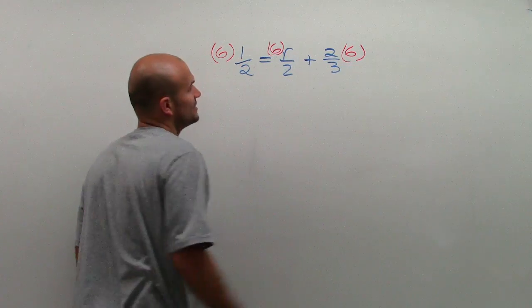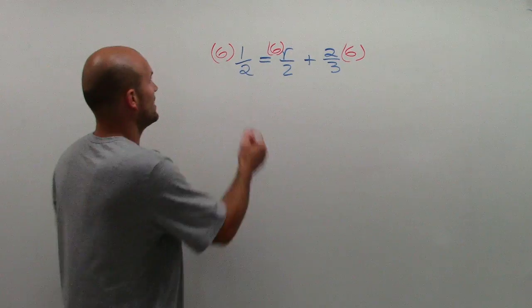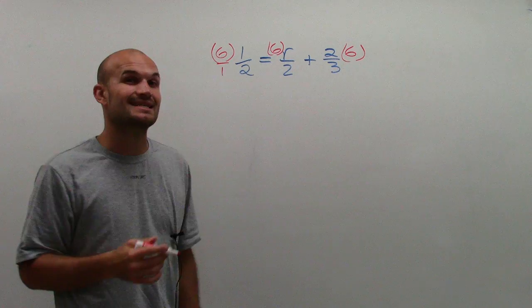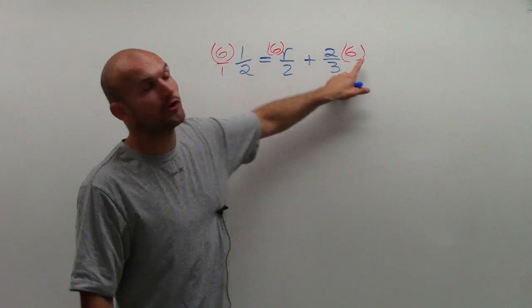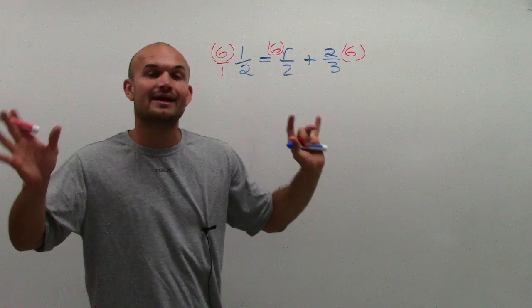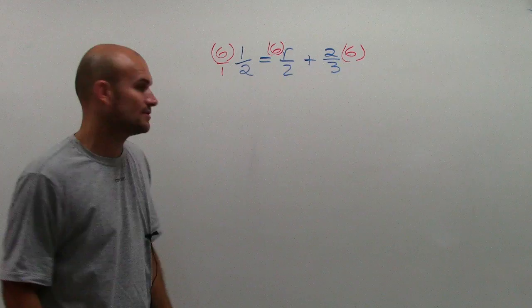Now, a lot of students get mixed up with this because they want to divide six on the bottom. That would be one sixth. Now, I'm multiplying by six, or we could write it as six over one if you want to write it as an equation. You can multiply on the left side, or you can multiply on the right side. It's OK. It doesn't matter by the commutative property of multiplication, right?